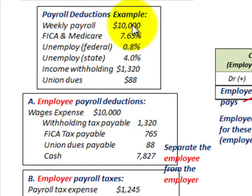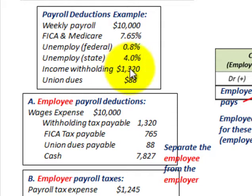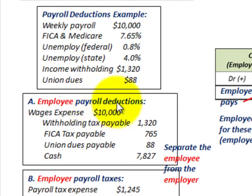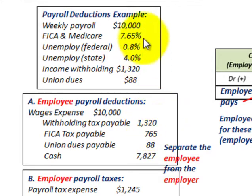In our example, a company has a weekly payroll of $10,000 with the following taxes: FICA/Medicare tax of 7.65%, federal unemployment tax (FUTA) of 0.8%, and state unemployment tax of 4%. There's also income tax withholding on the employee's wages of $1,320 for this weekly payroll. Additionally, employees have $88 in union dues to pay. Looking at the employee payroll deductions: withholding tax payable of $1,320, FICA tax at 7.65% of $10,000 equals $765, and union dues payable of $88.